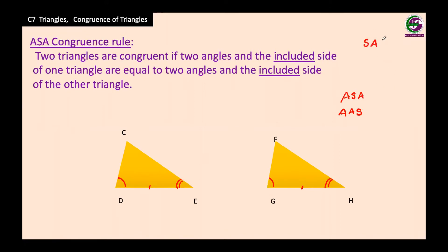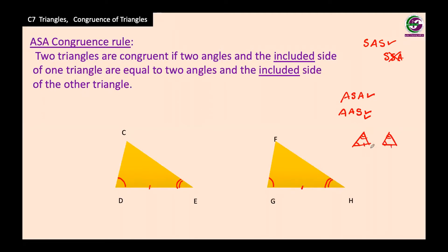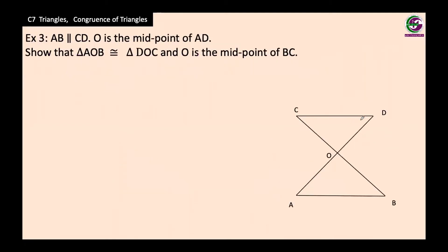Remember that SAS congruence cannot be written as SSA — there is no such rule. It must be SAS only. However, ASA can also be written as AAS, which means if you have two angles that are equal and one of the other sides (which need not be the included side) is equal, then these two triangles are congruent by AAS congruence.